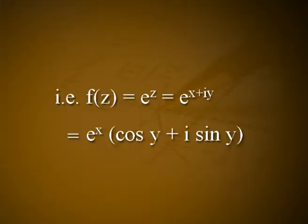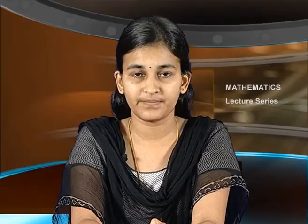So the required conditions are clearly satisfied by f(z) = eᶻ = e^(x+iy) = eˣ(cos y + i sin y). We use the notation exp(z) instead of eᶻ for convenience. The exponential function of complex analysis is thus defined for all z by: eᶻ = eˣ(cos y + i sin y), where z = x + iy.